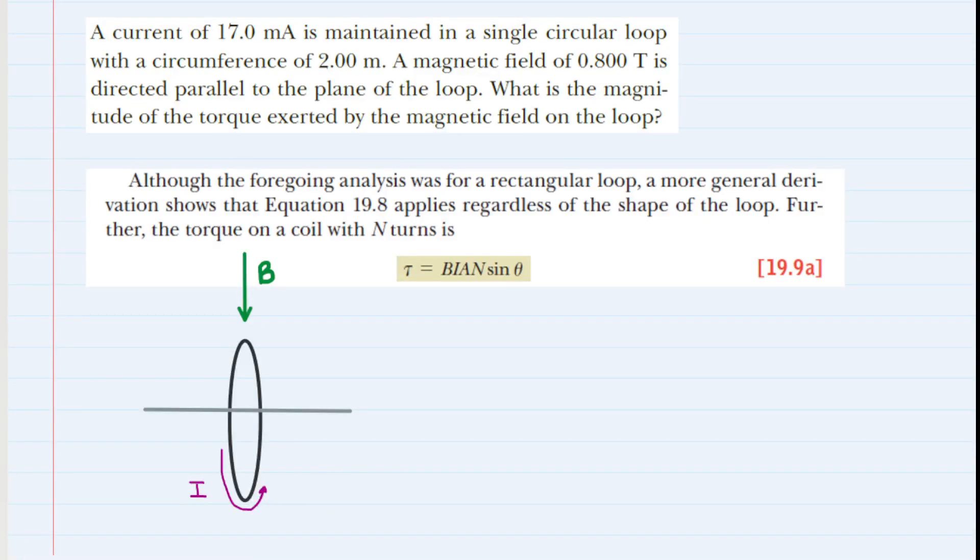Feel free to pause the video and take a moment to reread the problem if that would help you out. In this problem, we have a current of 17 milliamps that is maintained in a single circular loop with a circumference of 2 meters.